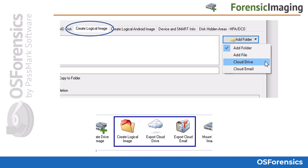Note that while the directory structure, file contents, and some metadata are preserved, some data may be lost, such as slack space, fragmentation, unallocated space, and deleted files. You can create a logical image of a single file, a directory, a user account, or an entire drive. You can also use this feature to perform cloud imaging for accounts such as Gmail or Dropbox, using the Export Cloud Drive or Export Cloud Email options, which can also be found on the OSF start screen.